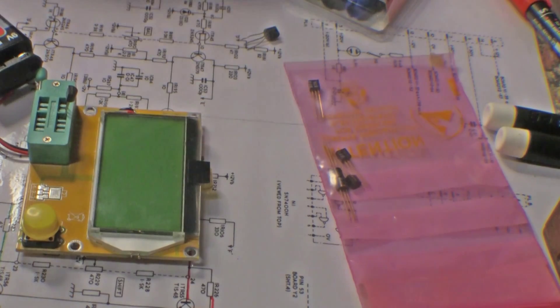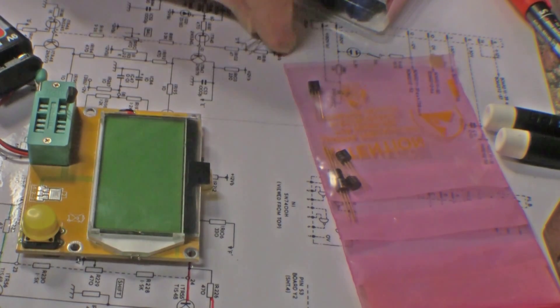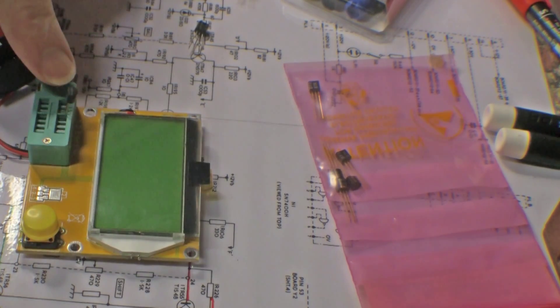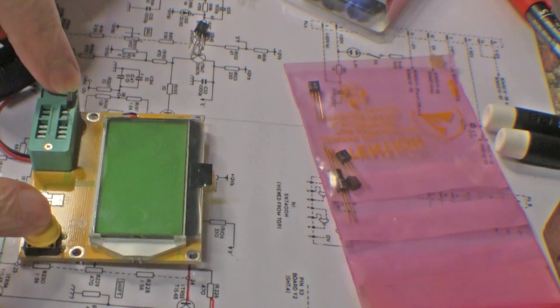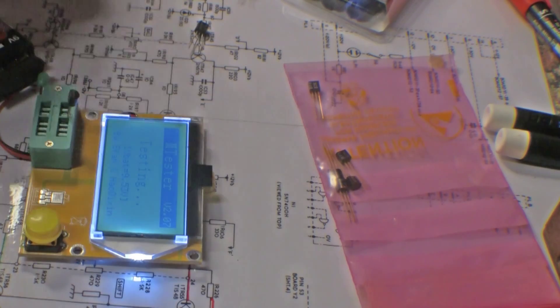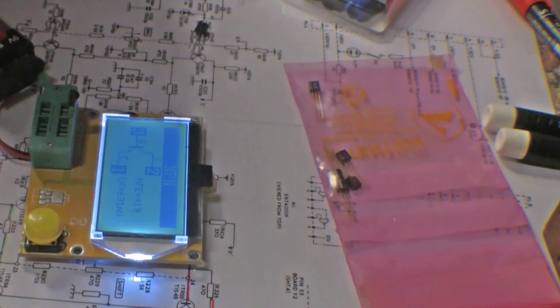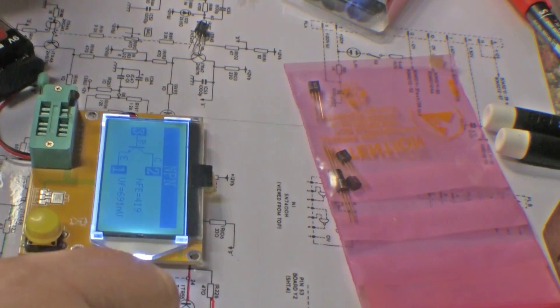So I'm gonna try and show you the symptoms with the transistors I've taken out. So this is a replacement BF357K, and when I pop it in the old transistor tester, it comes up as a regular transistor collector-based emitter, with the HFE of 419. So as you would expect.